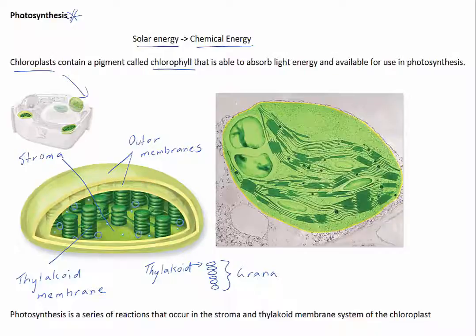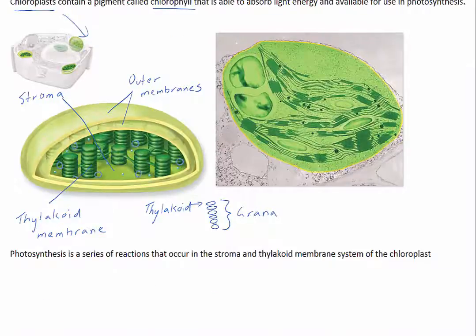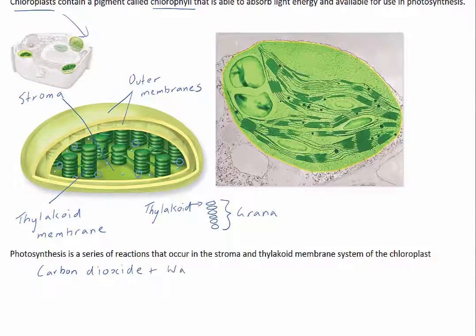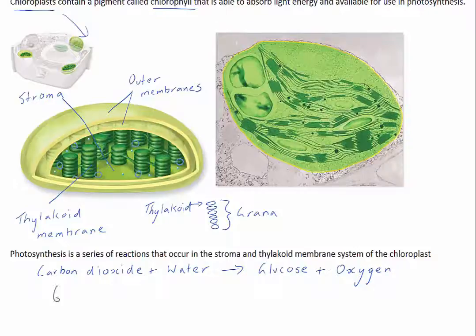Photosynthesis is a series of reactions that occur in the stroma and thylakoid membrane system of the chloroplast. During these photosynthesis reactions, carbon dioxide and water are combined to produce glucose and oxygen. The internal membranes of chloroplasts are folded many, many times, and this provides more surface area for the chemical reactions of photosynthesis to occur.